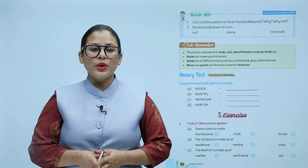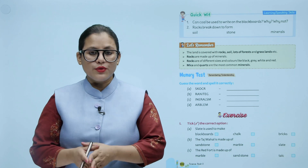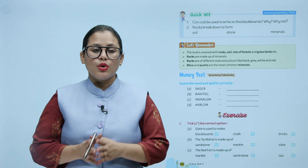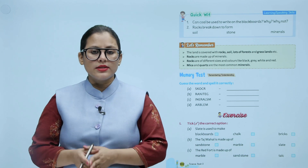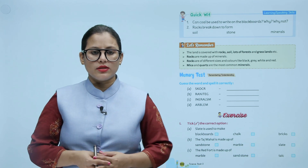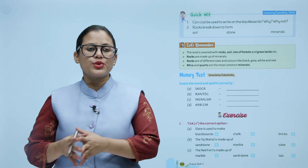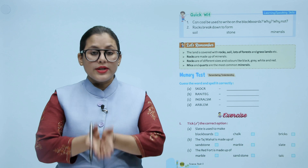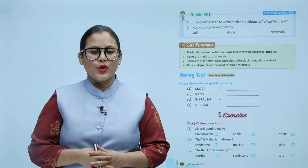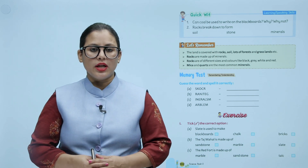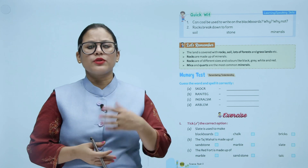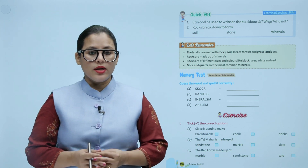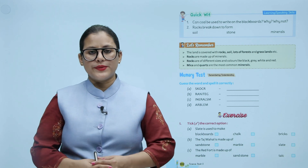Let's remember: The land is covered with rocks, soil, lots of forest and grasslands, etc. Rocks are made up of minerals. Rocks are of different sizes and colors like black, grey, white and red. Mica and quartz are the most common minerals. Aap ki jo land hai, woh covered hai rocks se, forest se, soil se, aur grasslands se. Rocks minerals se bani hoti hain aur different size aur different colors ki hoti hain — jaise black, grey, white and red. Mica and quartz aapki most common minerals hain.